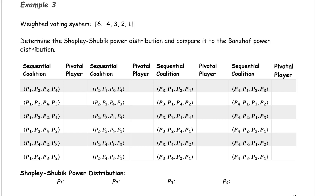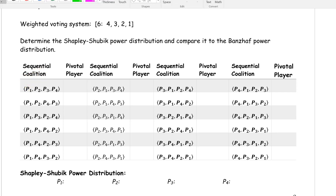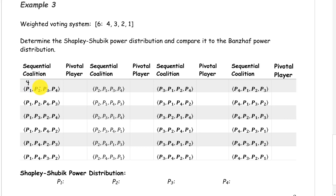With the first sequential coalition, players 1, 2, 3, and 4: Player 1 has a weight of 4. We still haven't met quota, so we add in player 2. Player 2 has a weight of 3, and 4 plus 3 is 7, and player 2 causes it to be a winning coalition. So player 2 is our pivotal player.